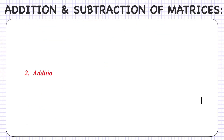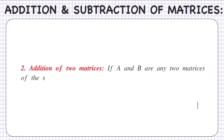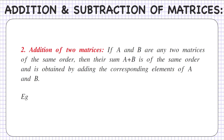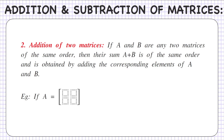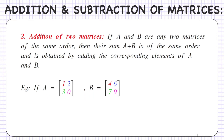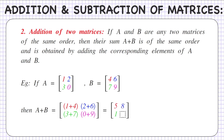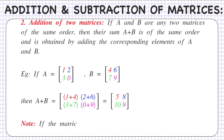Second: addition of two matrices. If A and B are any two matrices of the same order, then their sum A+B is of the same order and is obtained by adding the corresponding elements of A and B. For example, if A equals [1, 2, 3, 0] and B equals [4, 6, 7, 9], then A+B will be [1+4, 2+6, 3+7, 0+9] which equals [5, 8, 10, 9]. Note: if the matrices are of different order, addition is not possible.